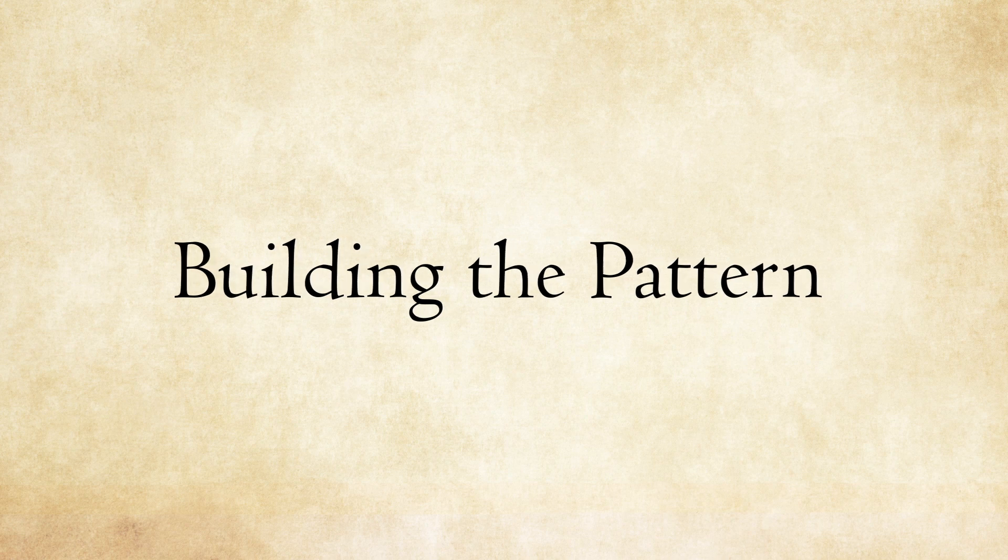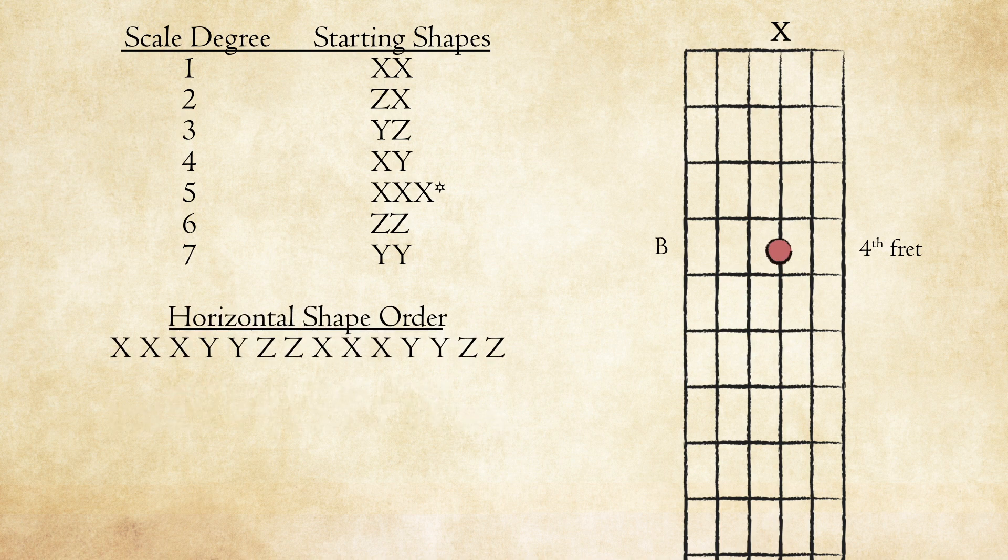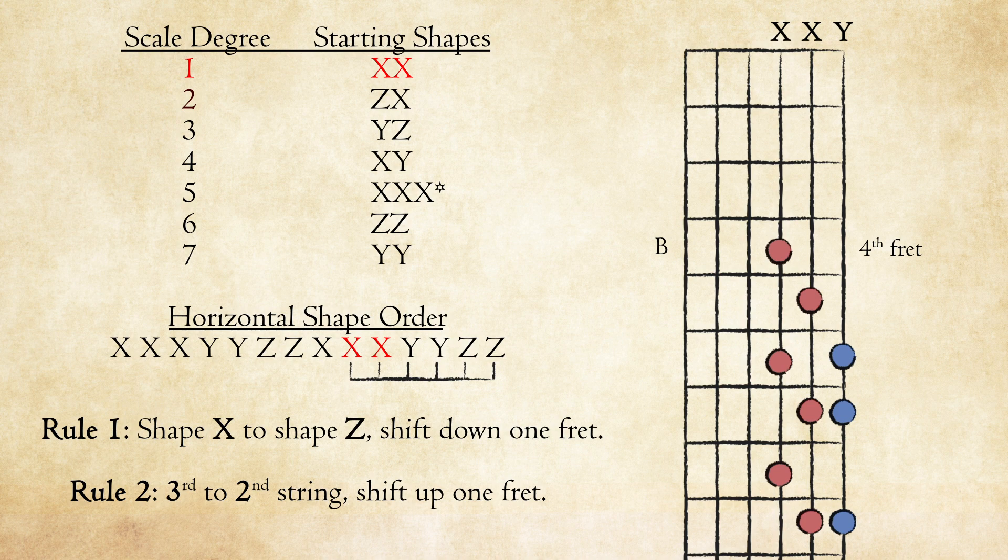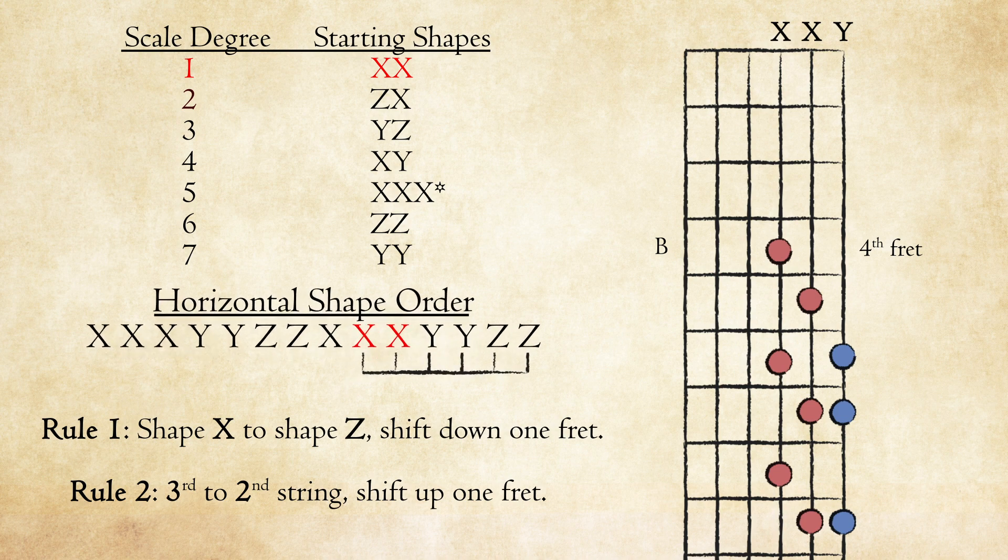Here's an example. Let's build B major on the 3rd string. We find B on our fretboard and build the scale upwards using the rules and shape order we learned in the previous video. If we want to go back down, we need to look at the shape order of the scale we just built.